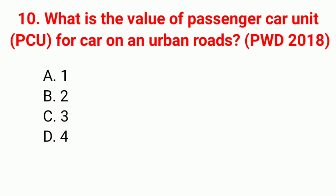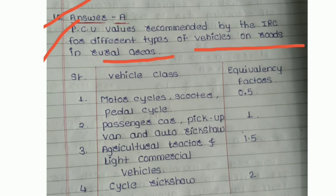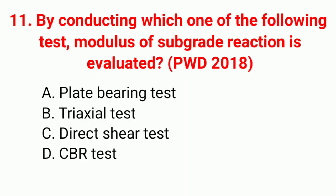Question 10: What is the value of Passenger Car Unit (PCU) for a car on urban roads? Correct answer option A: 1. PCU values recommended by IRC for different vehicle types: motorcycle/scooter/pedal cycle = 0.5; passenger car/pickup van/auto rickshaw = 1; agricultural tractor and light commercial vehicles = 1.5; cycle rickshaw = 2. Answer is A.